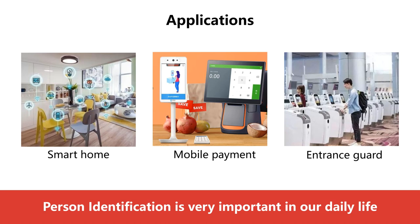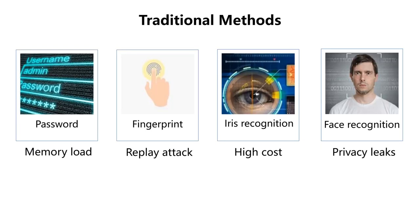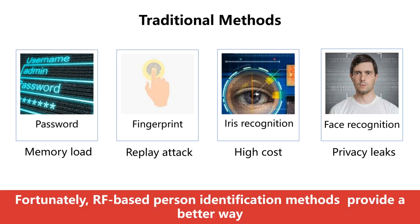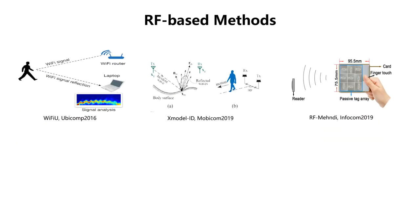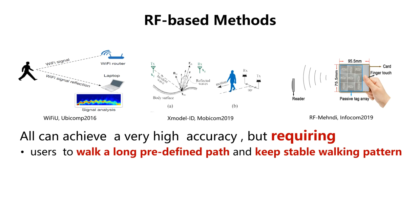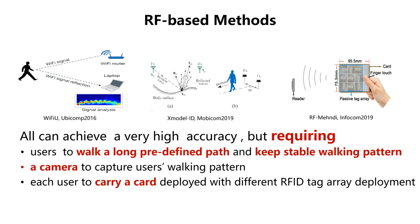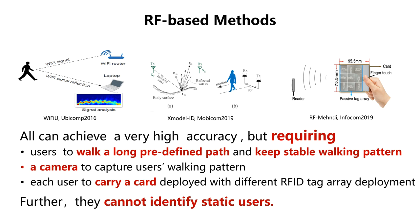We will talk about the current existing solutions for personal identification. Traditional systems mainly use password, fingerprint, iris recognition, or camera. Although they can achieve promising performance, they have limitations such as memory load, replay attack, high cost, and privacy leaks. Fortunately, RF-based personal identification methods provide a better way due to their appealing contact-free nature. Recently, some works have used RF signals to identify users. These works can achieve very high accuracy, but require users to keep a stable walking path and a camera, or each user to carry an outfit card. Further, they cannot identify static users.